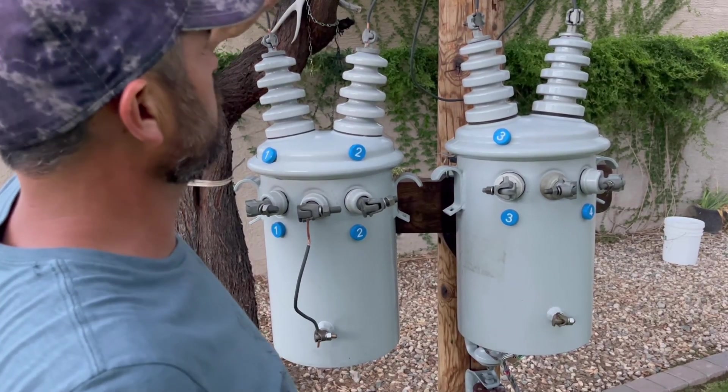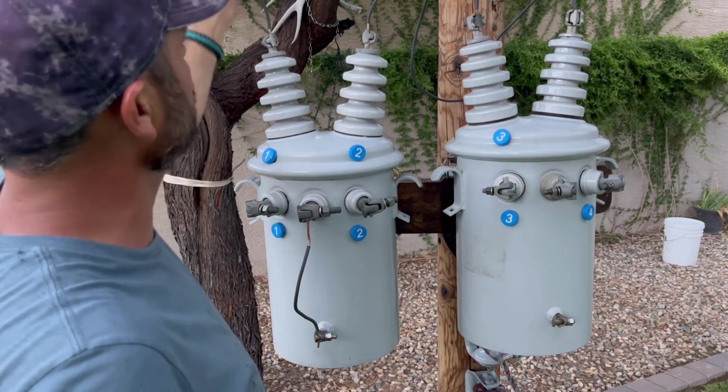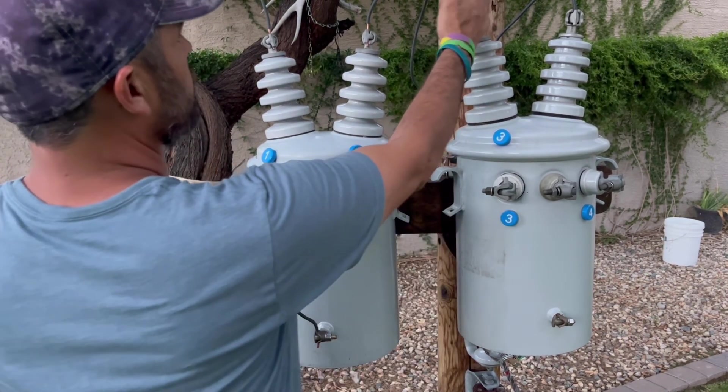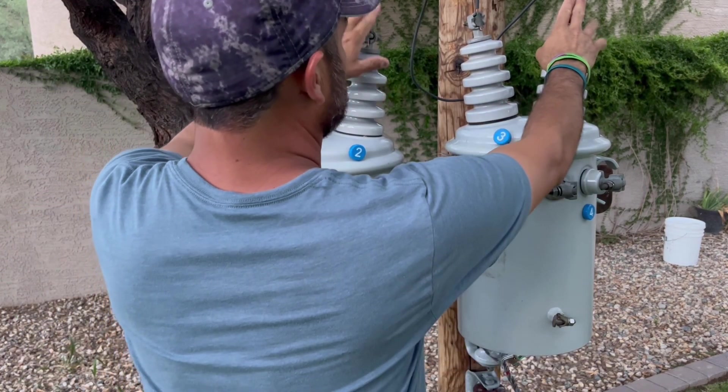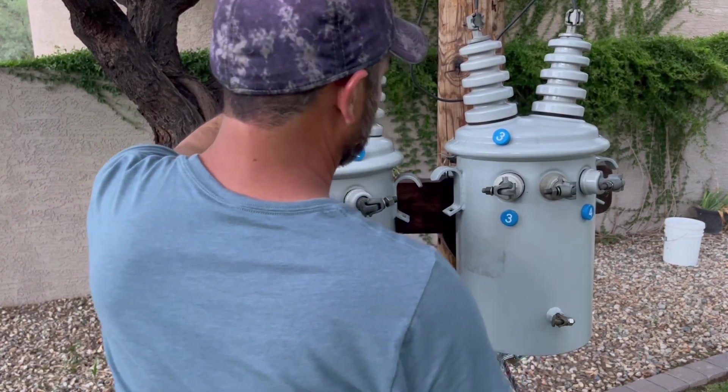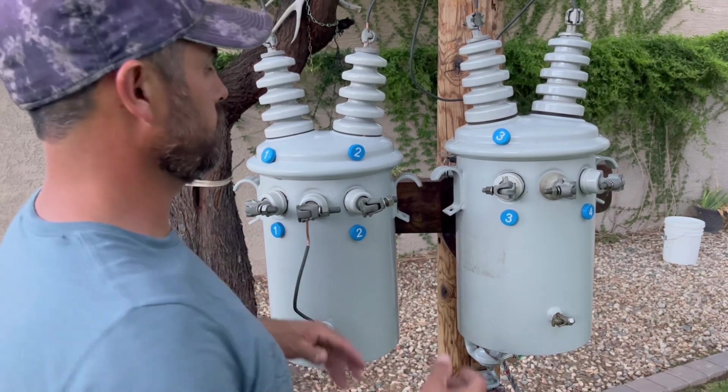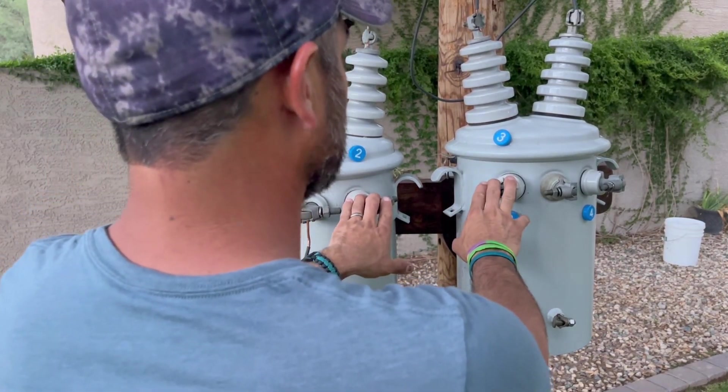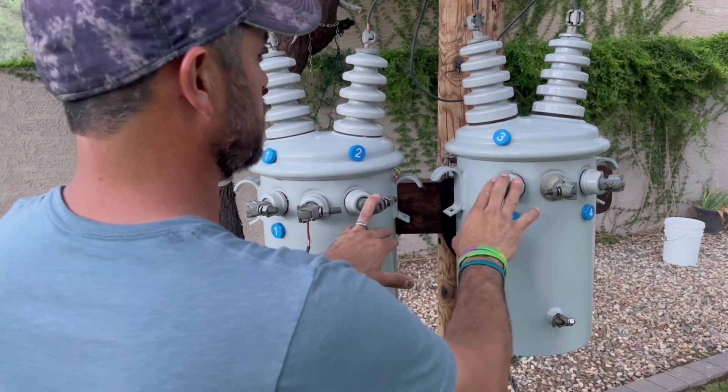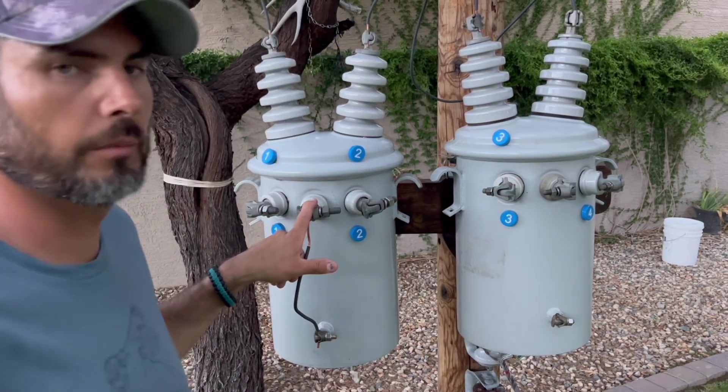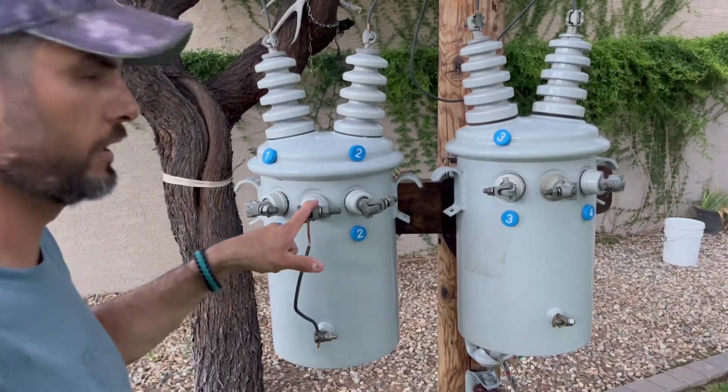So guys, we've got our primary hooked up. We've got our one bushing going to A phase, we've got our three bushing going to B phase, and our two to four bushings are tied together going to circuit neutral. So now the only thing left to do is to hook up our secondary connection. If you guys remember, we decided to do a two to three tie, and our neutral is going to come off of our one to two transformer. Let's hook it up.